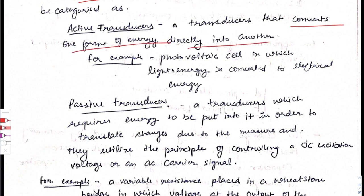Active transducers convert one form of energy directly to another. For example, a photovoltaic cell in which light energy is converted to electrical energy.